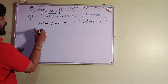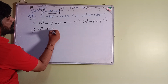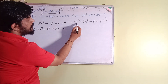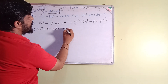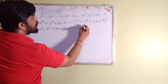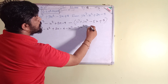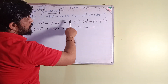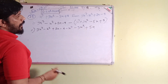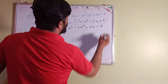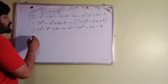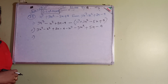Now we have 3x³ minus x² plus 2x minus 4, and then we distribute the minus sign: plus into minus gives minus, so minus x³; plus into minus gives minus 3x²; minus into minus gives plus 5x; and plus into minus gives minus 4.